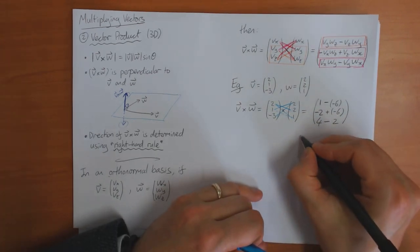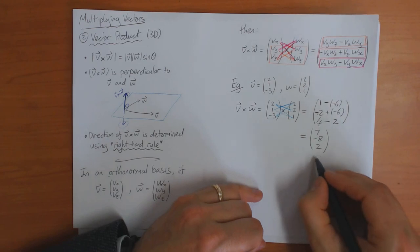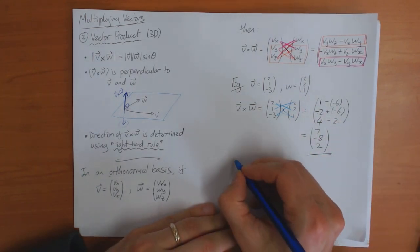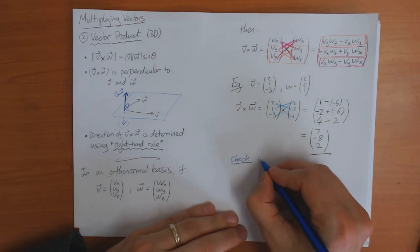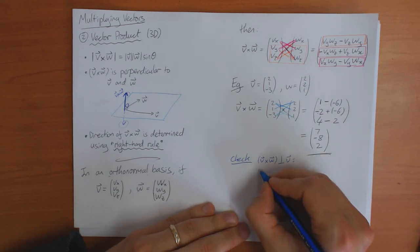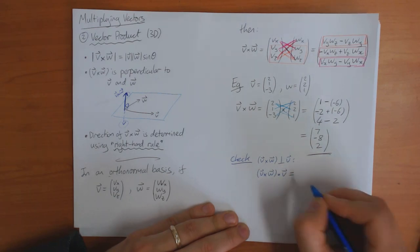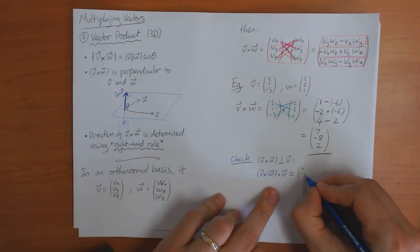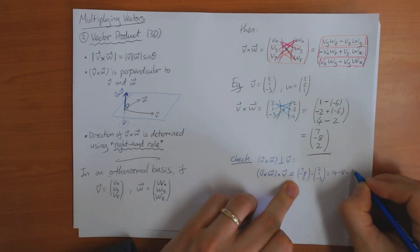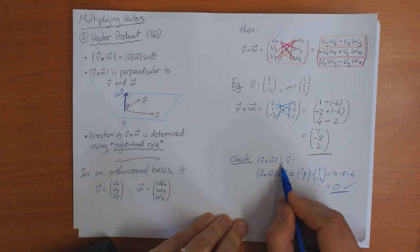So this gives the answer: (7, −8, 2). One thing which is nice to do — you may have made a mistake — is to check that v cross w is perpendicular to v using the scalar product. Remember that if two vectors are perpendicular, their scalar product equals zero. So: (7, −8, 2) · (1, 1, −3) = 7 − 8 − 6 = ... wait, that's 14 − 8 − 6 = zero. So that looks good — I probably haven't made a mistake.